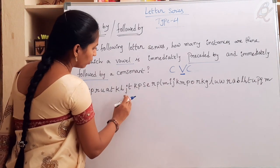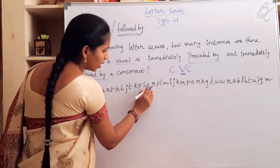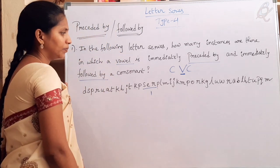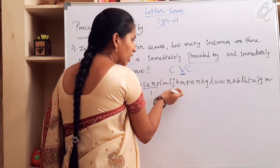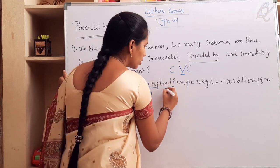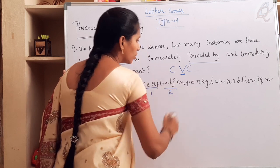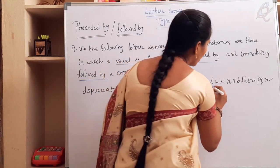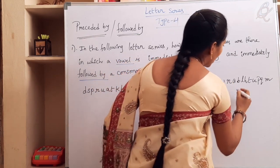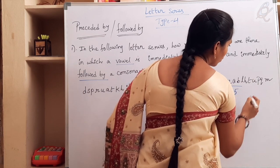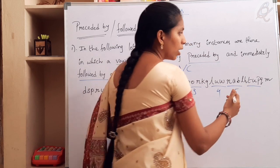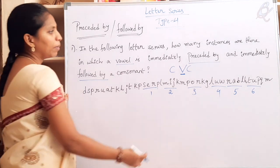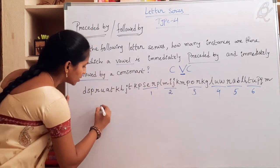Next, check for E — before letter and after letters are consonants, so that's one. Next, I — before letter is M, after letter is J, both consonants, condition satisfied, count it: two. Next, O — P and R are consonants: three. And U — L and W are consonants: four. Next, A — R and B are consonants: five. Next, U — T and P are also consonants: six. There are six instances. Answer is six.